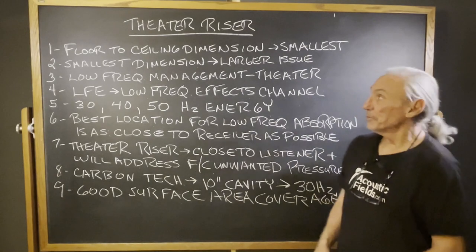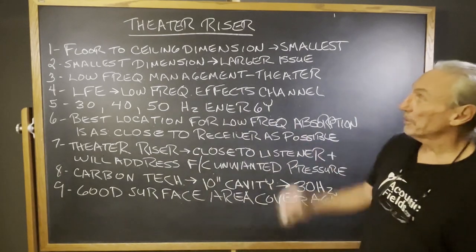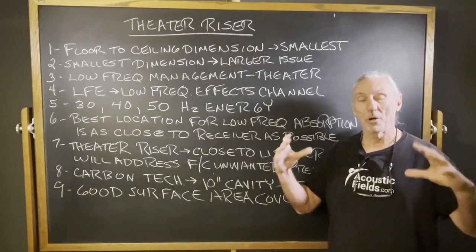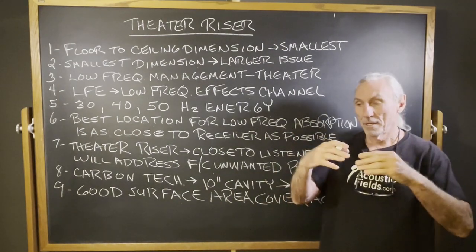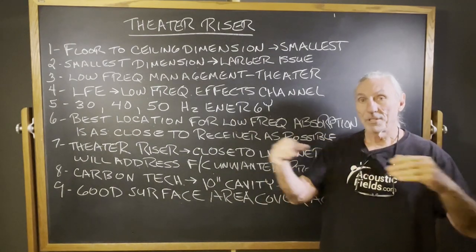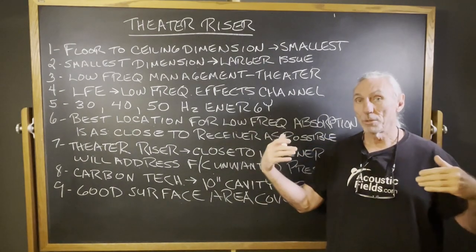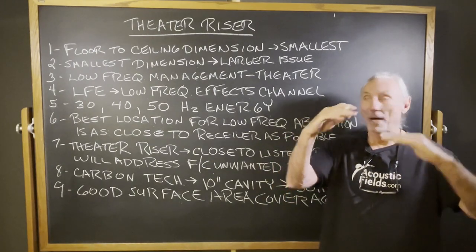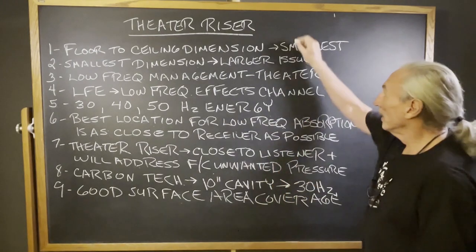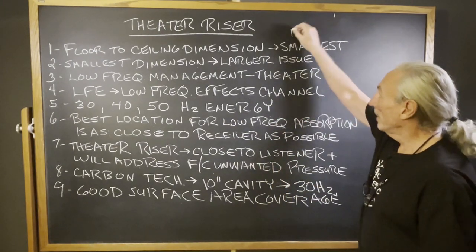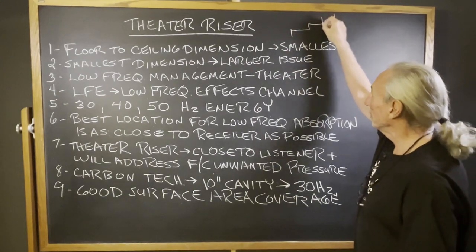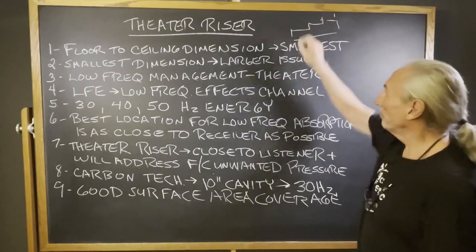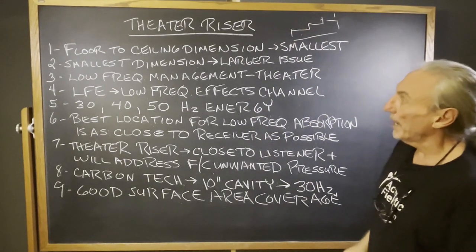Hi everyone, Dennis Foley from Acoustic Fields. Today we're going to talk about the theater riser. We all know what the riser is — sometimes two or three rows of seats in our theaters, and the second row has to be higher than the first row, obviously. So you can see, and this whole platform is called a riser.